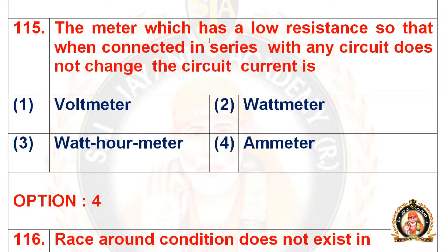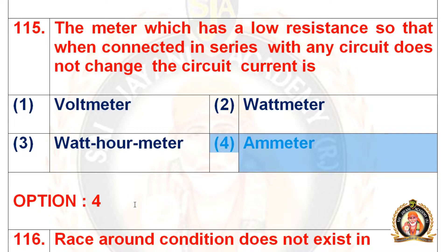Question 115: The meter which has a low resistance so that when connected in series with any circuit it does not change the circuit current. Options are voltmeter, wattmeter, watt hour meter, and ammeter. The right option is the wattmeter.